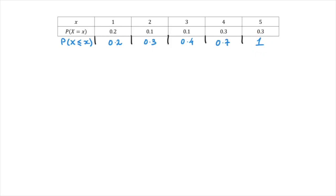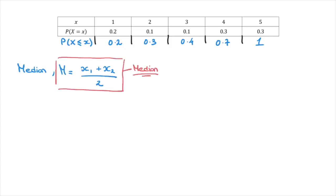Now to find the median, we're going to need a formula. The formula for the median is the following: the median, which we often refer to as capital M, is equal to X1 plus X2 over 2, where X1 is the largest value of X in this table such that the cumulative probability is still less than or equal to 0.5. On the other hand, X2 is the smallest value of X such that the cumulative probability is greater than or equal to 0.5.